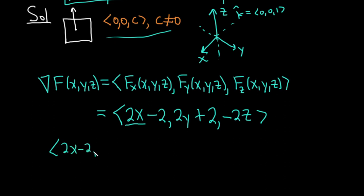2x minus 2, 2y plus 2, and negative 2z. That's equal to 0, 0, c.